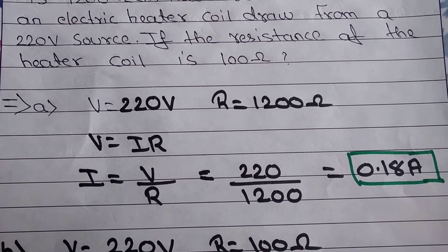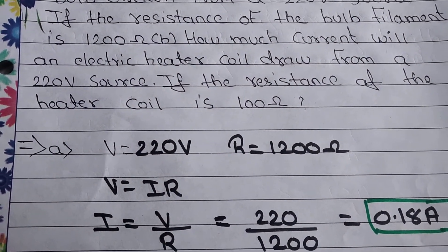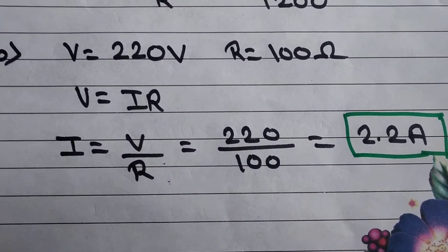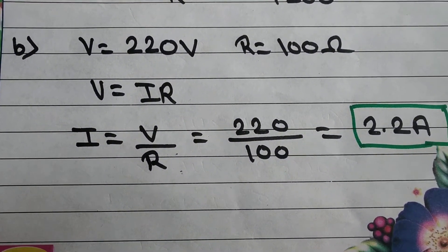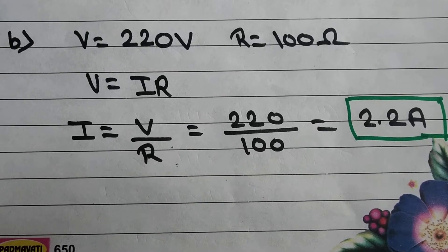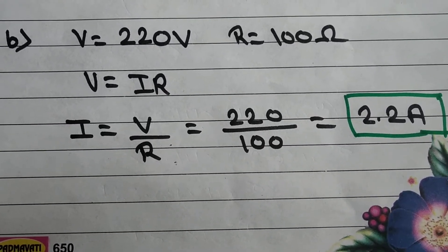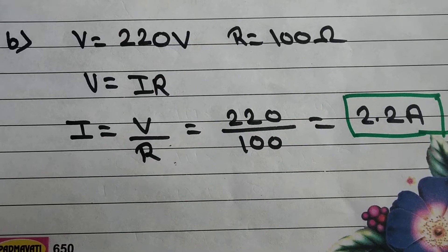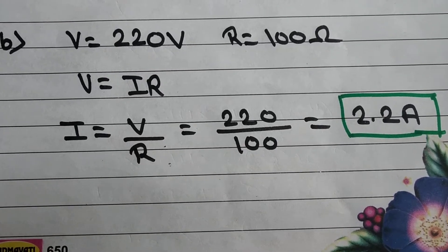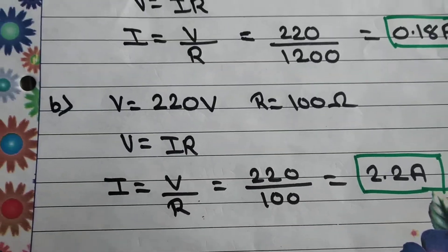The first part A is now solved. In the second part, we solve the same question but with V equals 220 and R equals 100. Again we find I. Given V equals 220 volt and R equals 100. According to Ohm's law, V equals IR, so I equals V upon R, that is 220 upon 100. We get 2.2 ampere. Question number 12.3 is now completed.